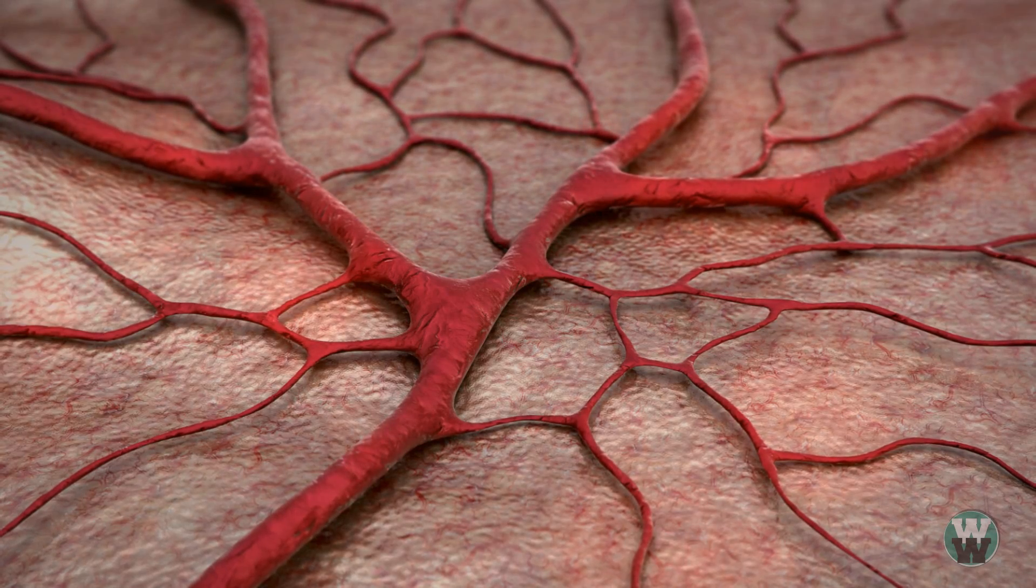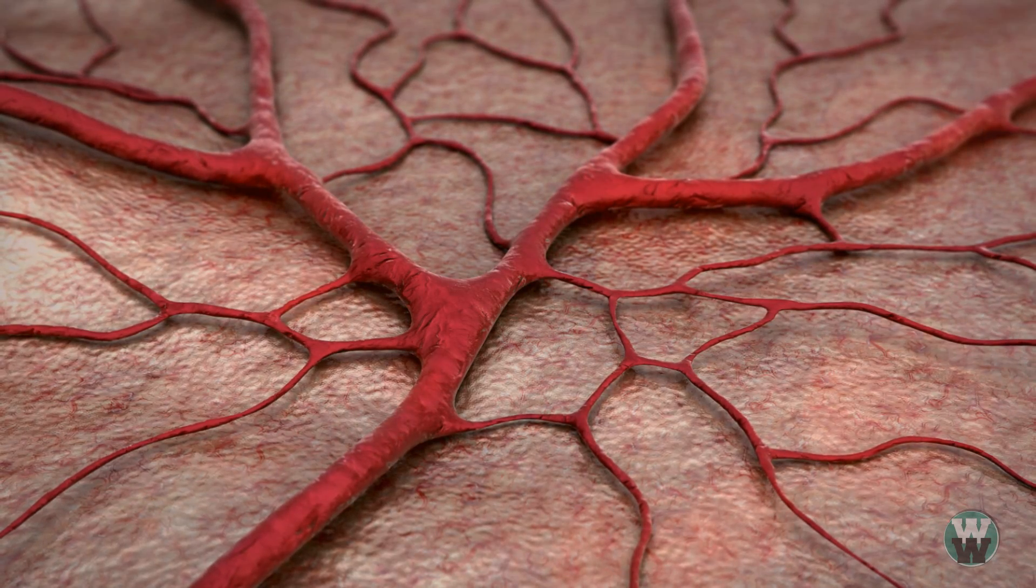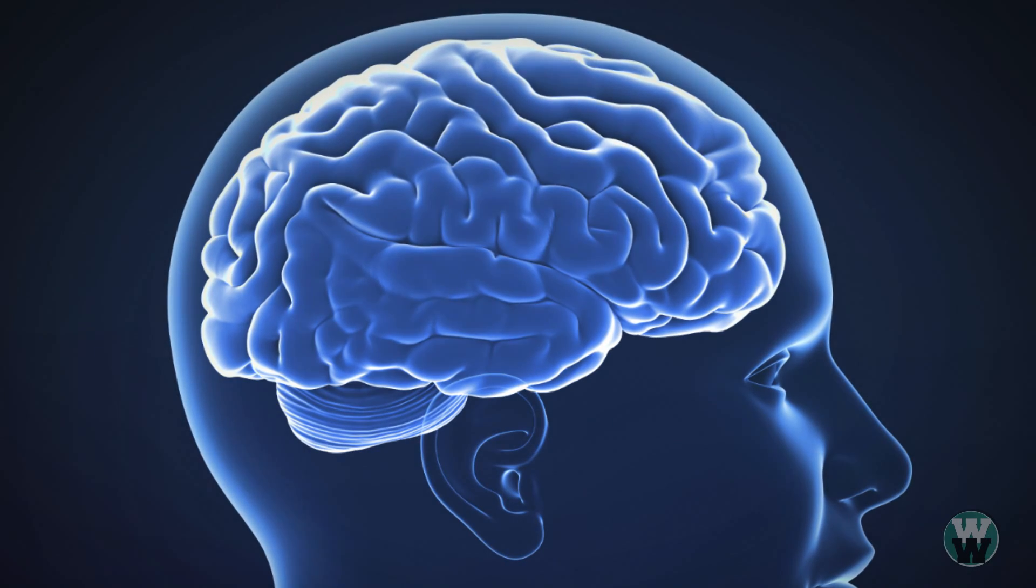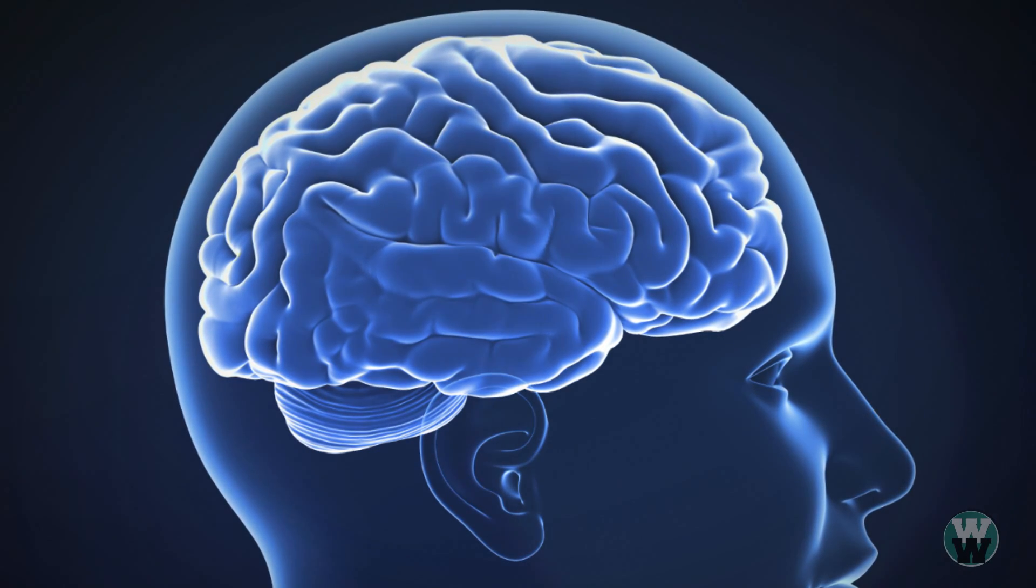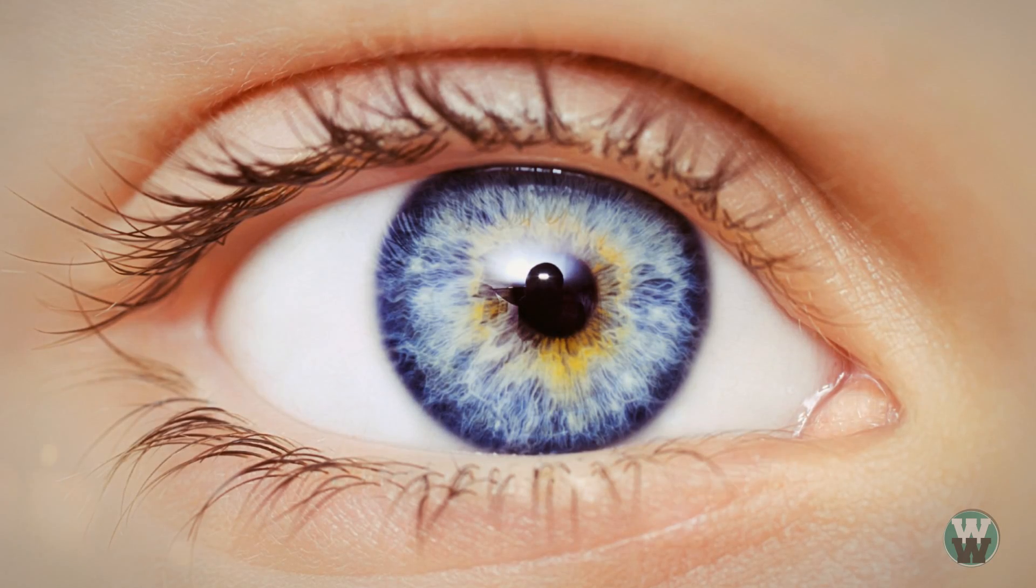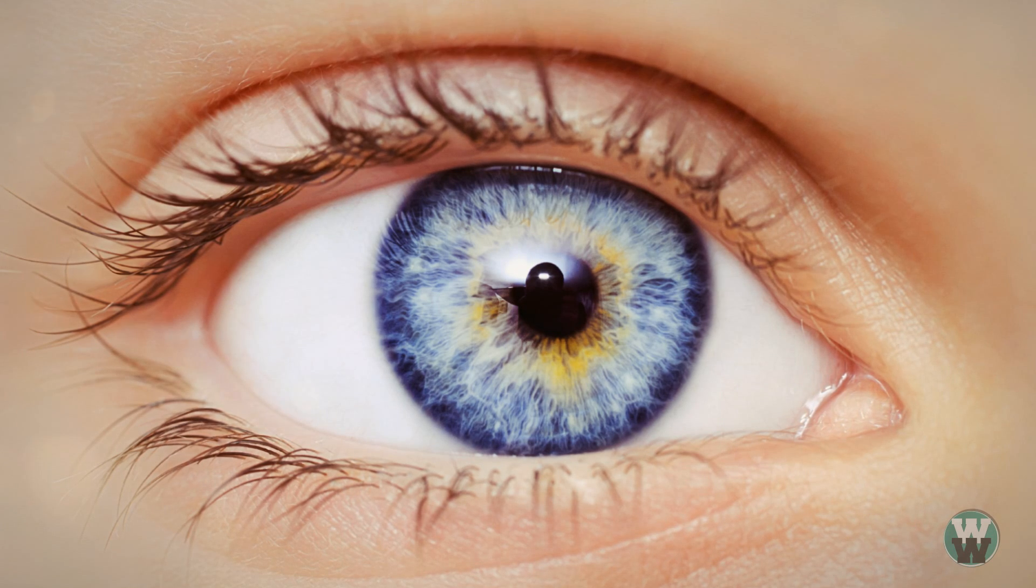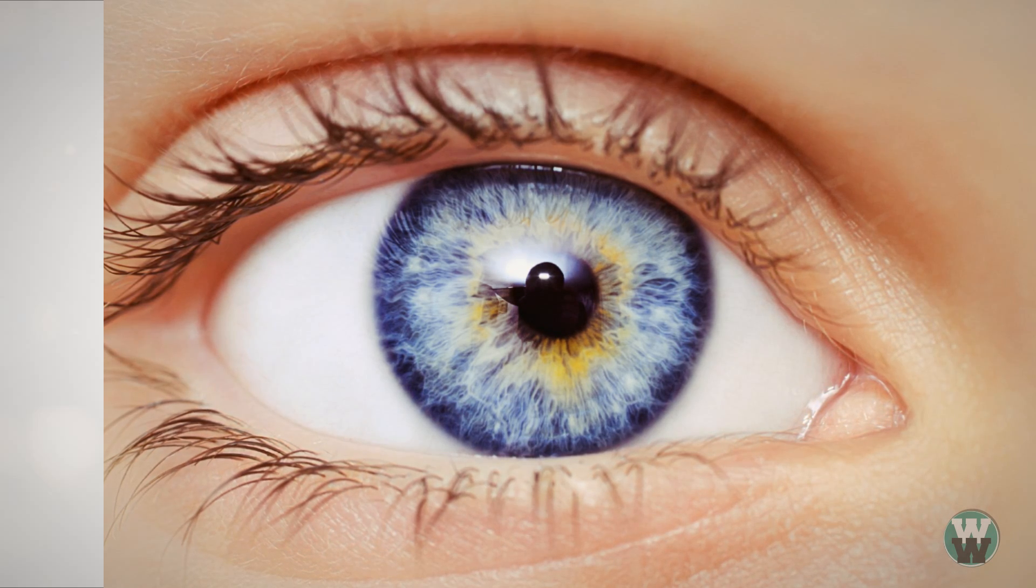There are 100,000 miles of blood vessels in an adult human body. We have more brain cells as a newborn baby than we will ever have again. If the human eye was a digital camera, it would have 576 megapixels.